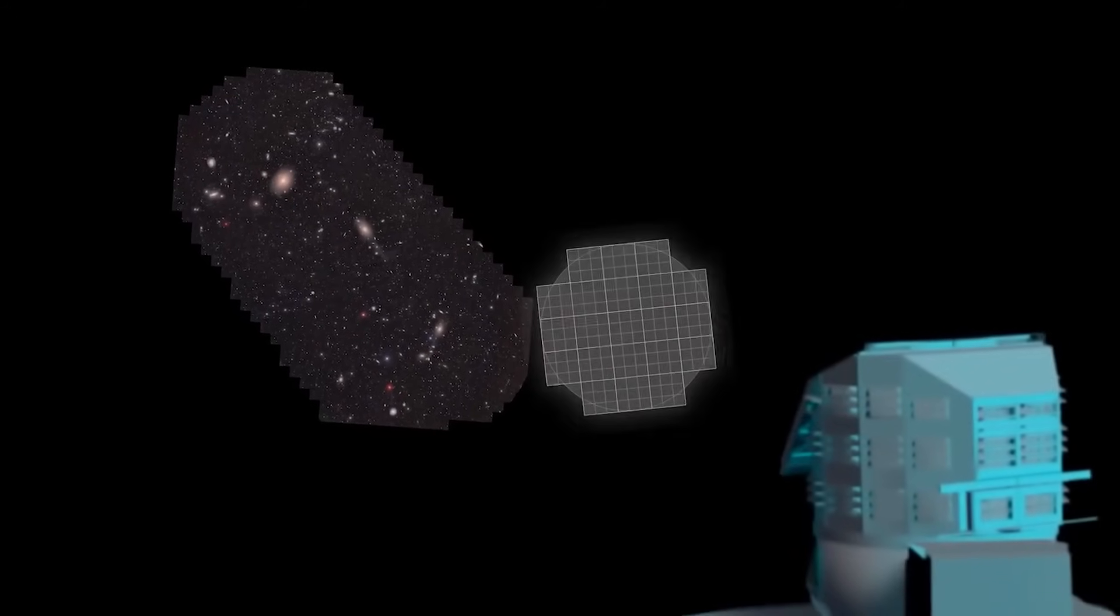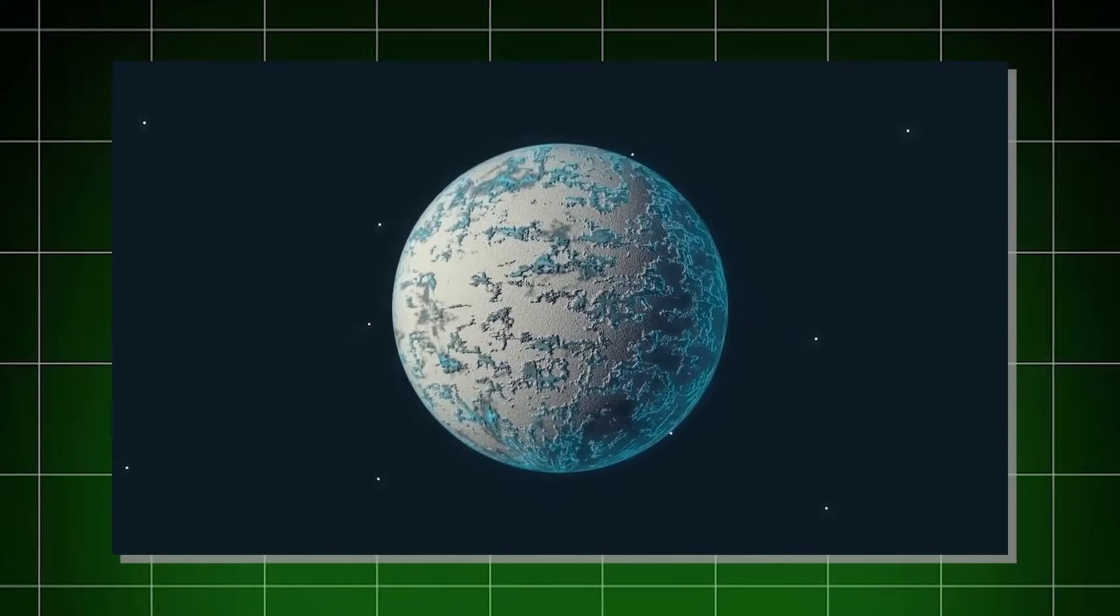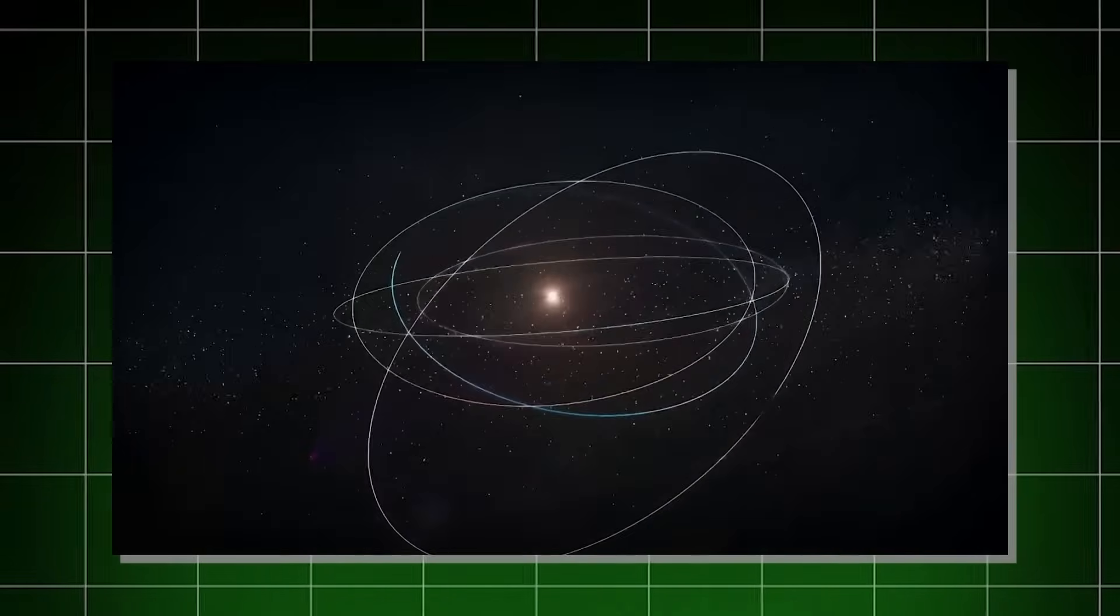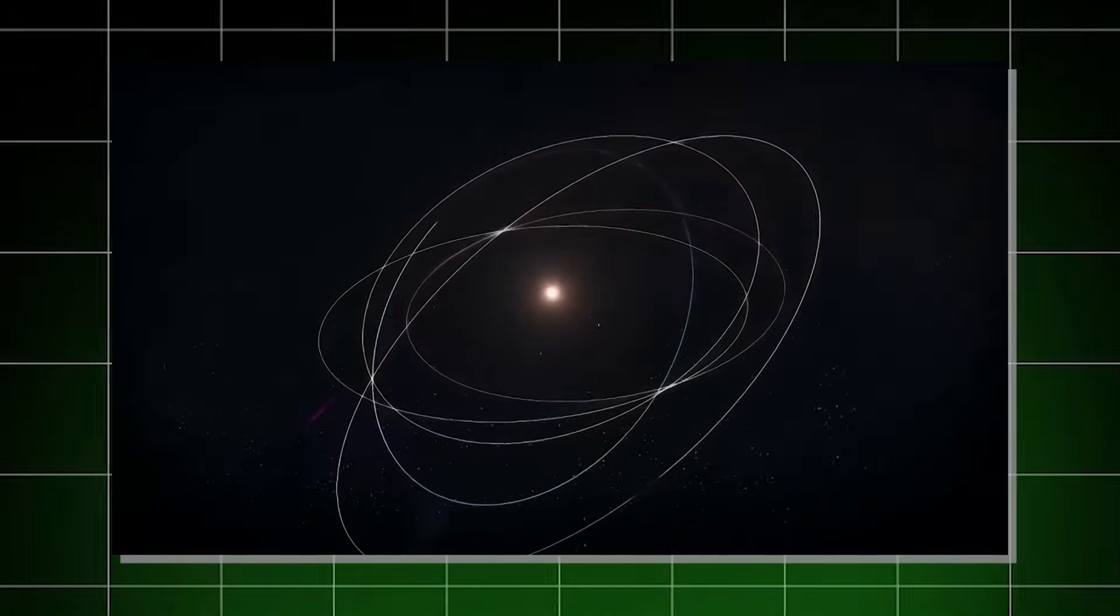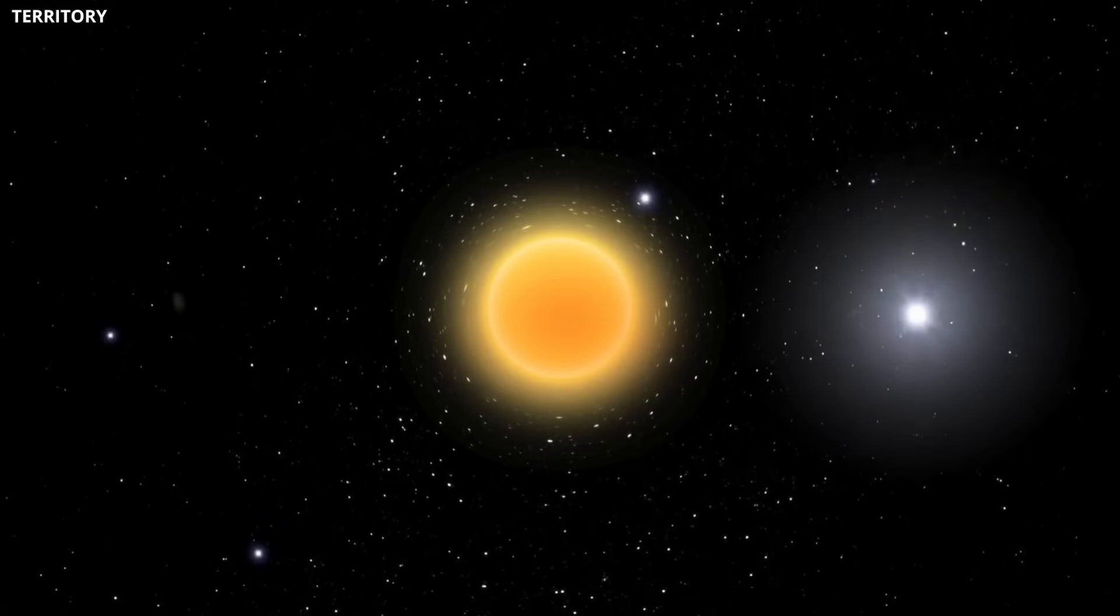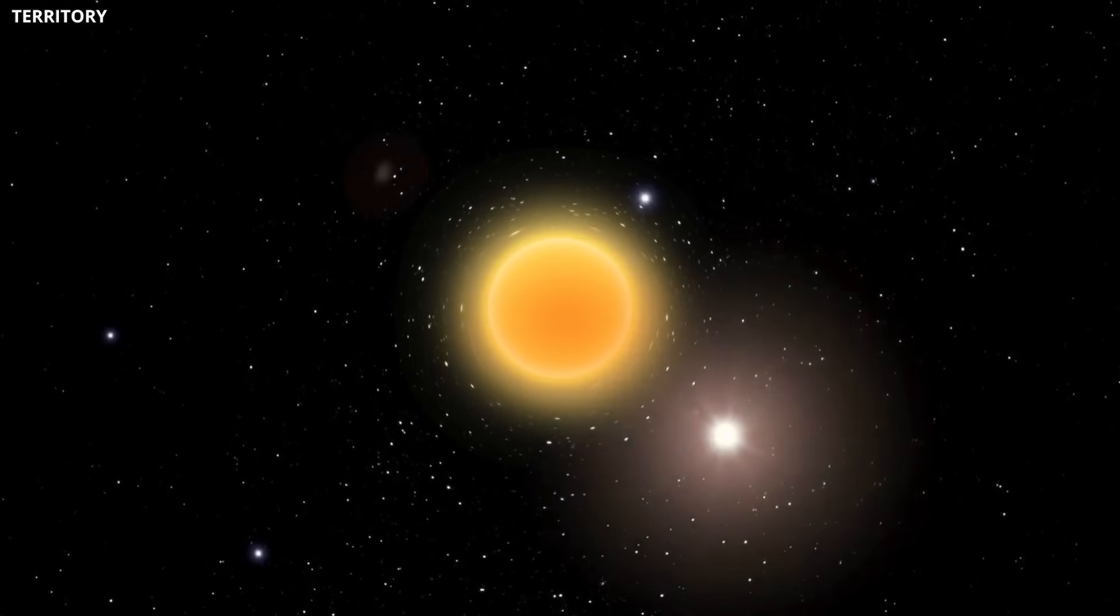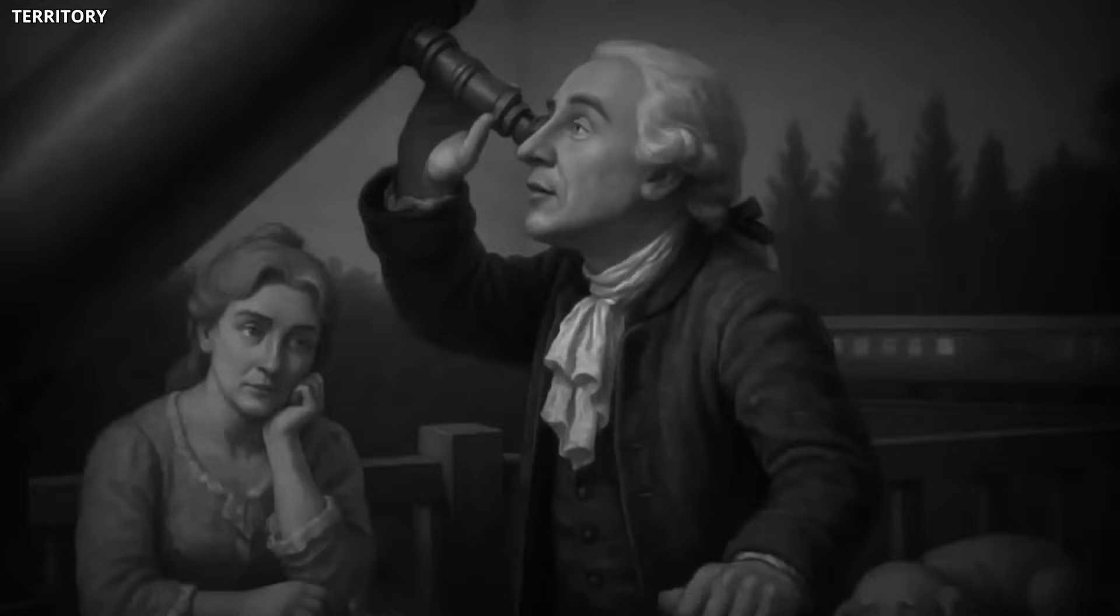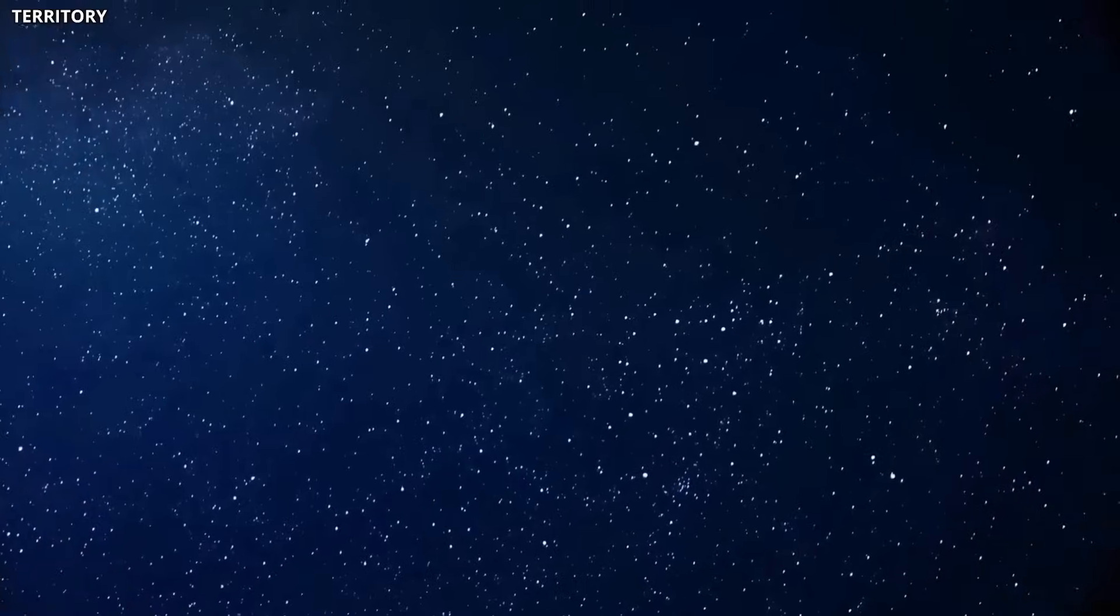We've already discovered dozens of new icy worlds, mapped parts of the solar system we'd never seen before, and learned more about how planets and smaller bodies move under the sun's influence. In the end, whether we find a hidden planet, a black hole, or simply the echoes of ancient cosmic events, the search will change how we see our place in the universe.